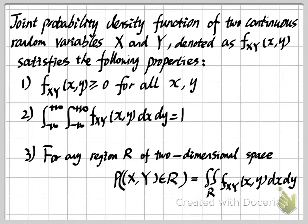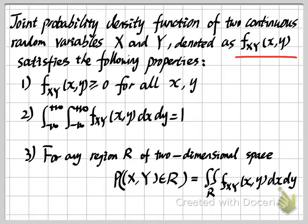The joint probability density function is also a function of the possible values of our continuous random variables. Because we have two continuous random variables denoted by capital X and capital Y, the function is similar to a PDF but is called a JPDF — joint probability density function. It has two variables X and Y, and we denote it by f sub XY with arguments small x and small y.